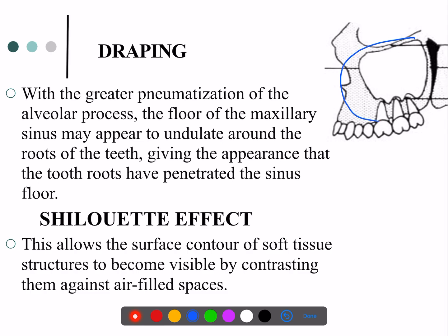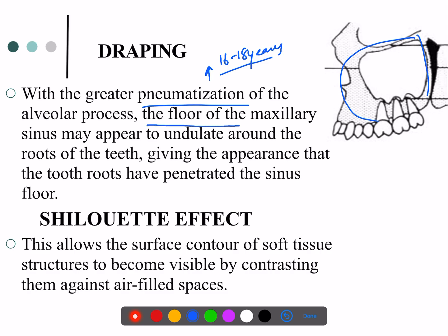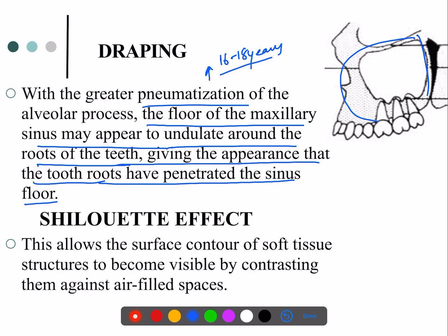As already discussed, the roots appear to be inside the wall on imaging. There is a question from 2014 or 2015 AIPG: pneumatization of the maxillary sinus ends at 16 to 18 years. The floor of the maxillary sinus appears to move around the roots, giving the appearance that the roots of the maxillary teeth penetrate into the sinus floor.